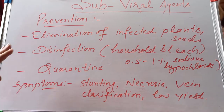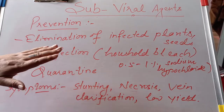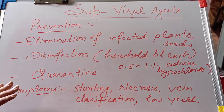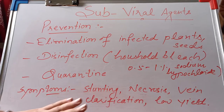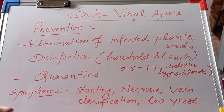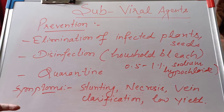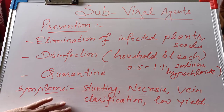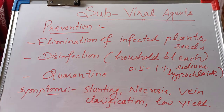For prevention, infected plants or infected seeds should be eliminated. Disinfection can be done using household bleach containing 0.5 to 1% sodium hypochlorite. Quarantine measures can also be applied. Symptoms caused by viroids include stunting, necrosis, leaf clarification, and low yield. An important question is whether viroids can affect human beings — the answer is no, because viroids are mainly plant pathogens and consuming infected fruit will not cause viroid infection in humans.